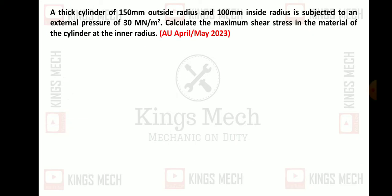We have solved this problem. Given detail in order to solve this problem, outside radius capital R is 150×10⁻³ meter, inside radius r is 100×10⁻³ meter. This pressure is 30 mega, mega is 10⁶, so 30×10⁶ newton per meter square.